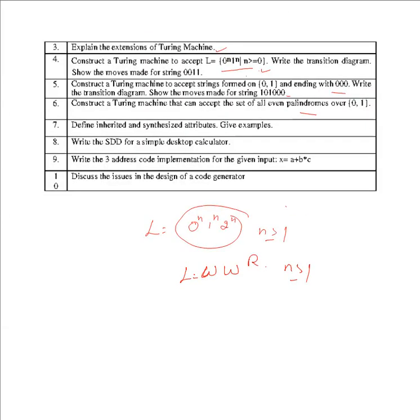In compiler design, define inherited and synthesized attributes. Write an SDD for a simple calculator. This is again an important question: Write a three-address code implementation for the given input. Here you have to apply three-address code, that is triples.